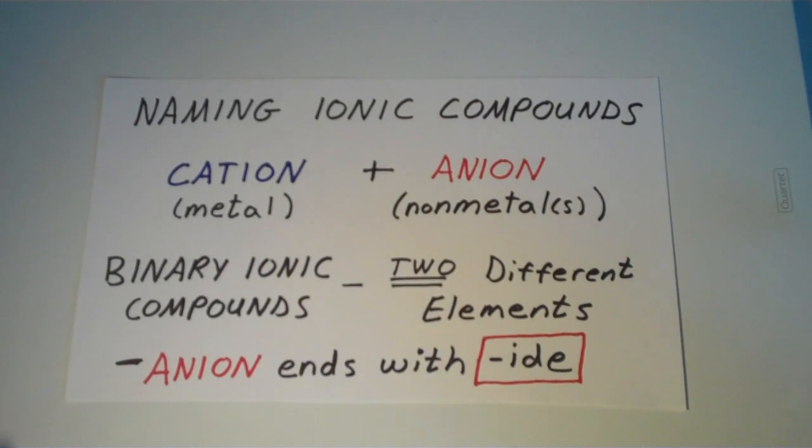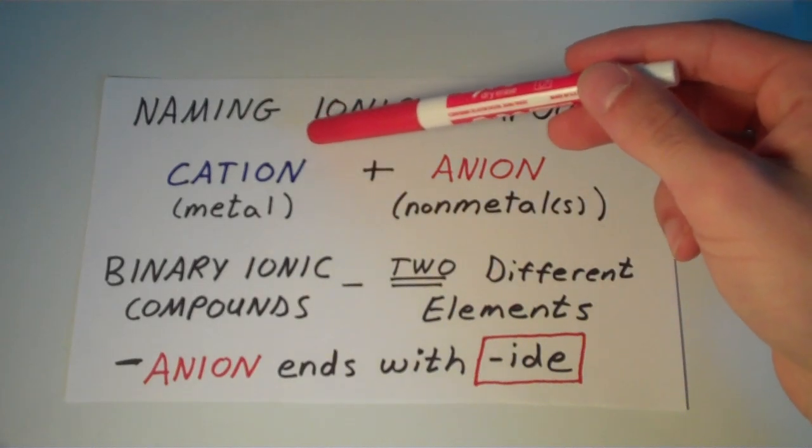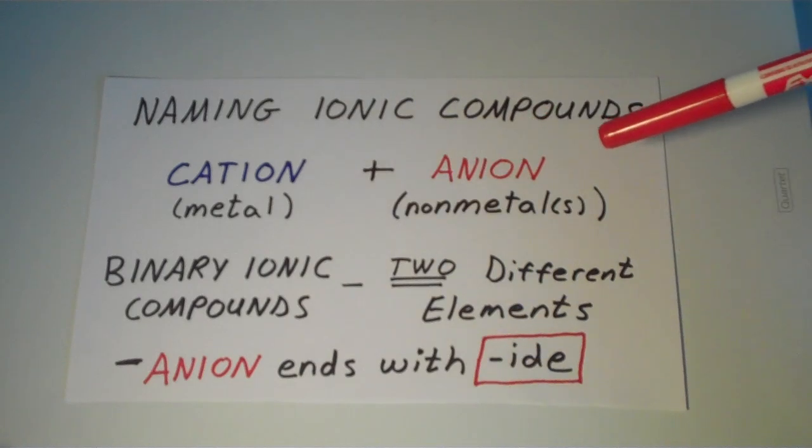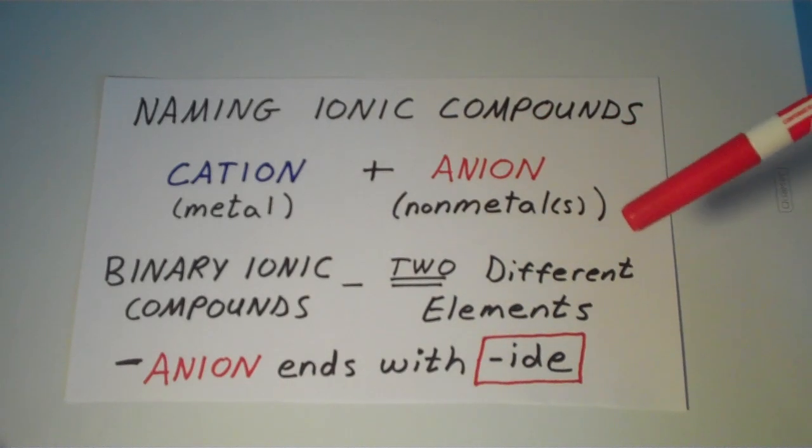All right, so now I'm going to show you how to name ionic compounds. To name ionic compounds, you name your cation first, which is usually the metal, and then you name your anion second, which is usually a nonmetal. It could also be a polyatomic ion.